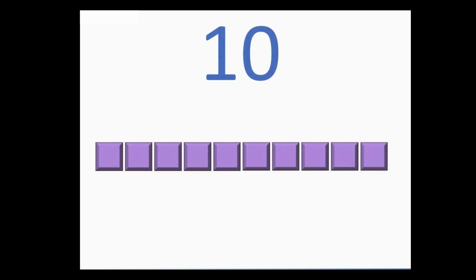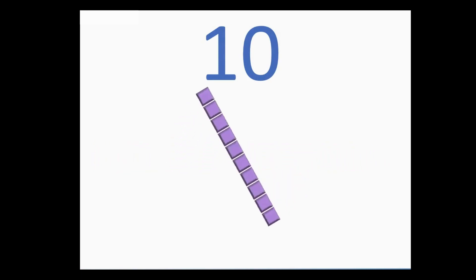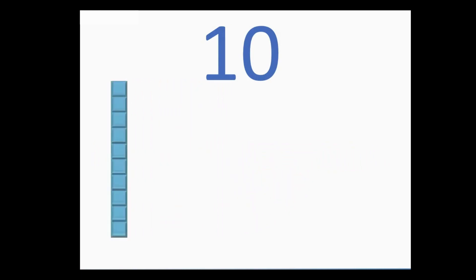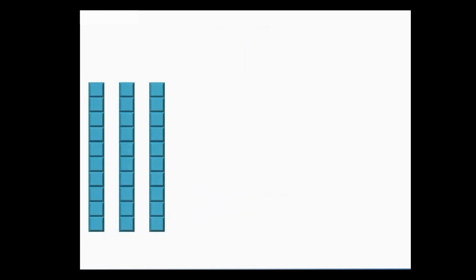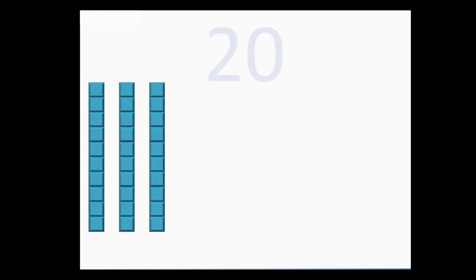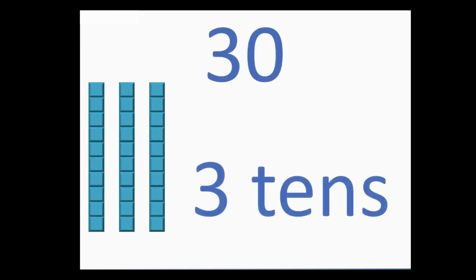When we have ten units, we can exchange them for one rod of ten blocks. Here we have one ten, which is 10; two tens, which is 20; three tens, which is 30. Each bar of ten is made up of ten blocks.